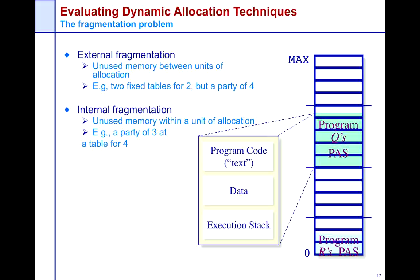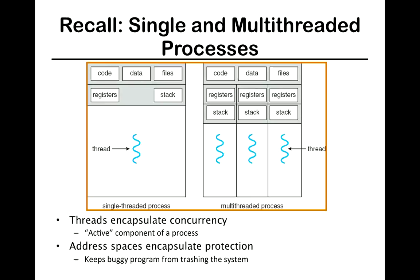Internal fragmentation is the case where unused memory occurs within a unit of allocation. For example, a party of three at a table of four — the program itself needs only two gigs, but you allocated four gigs because in the worst case you assumed the program could be allocating data that grows all the way to four gigs. If you've got unused memory within a unit of allocation, this is known as internal fragmentation.